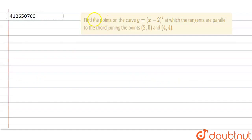Hello guys, so today our question is: find the points on the curve y equals (x minus 2) whole square at which the tangents are parallel to the chord joining the points (2,0) and (4,4).